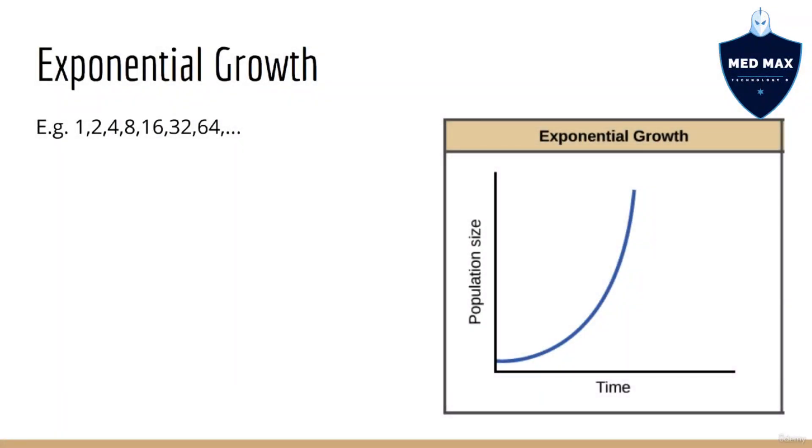Now you might be thinking, wait a minute, this isn't linear at all. If something grows by a constant factor over a given period of time, that's actually exponential growth. For example, it will grow from 1 to 2, 4, 8, 16, 32, 64, and so on.